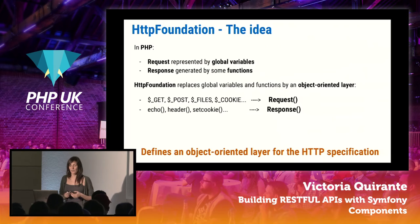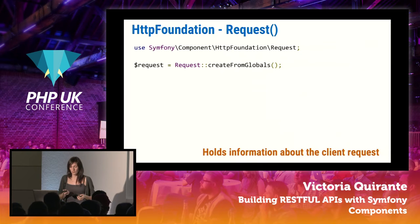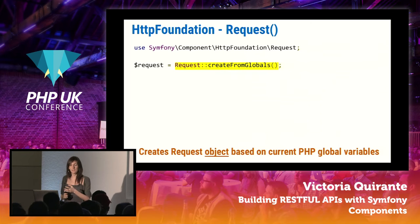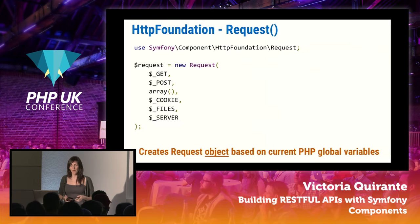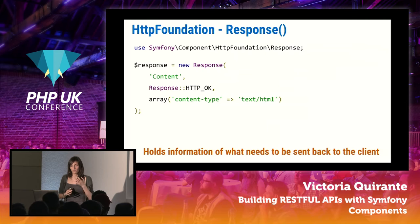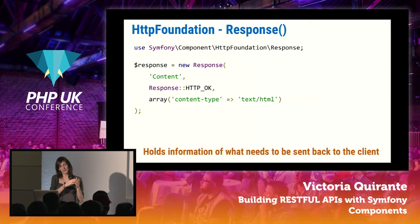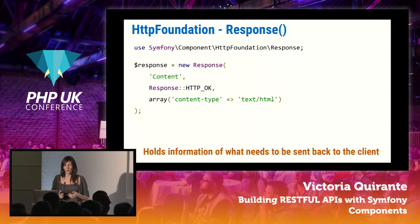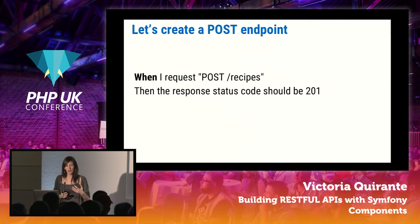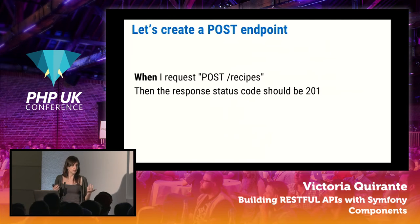We can create a Request using `createFromGlobals()`, which is simply creating a request object based on our current PHP global variables. For creating a Response, we pass three arguments: the content, the status code, and an array of headers — which is basically what we need in our API. For a POST endpoint, whenever we send a POST request there, we need to receive a 201 status code in the response.